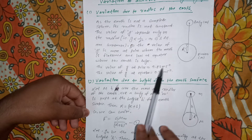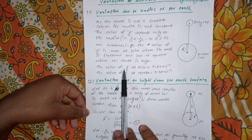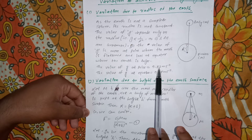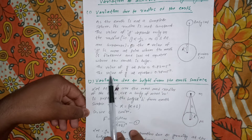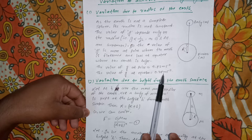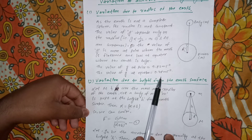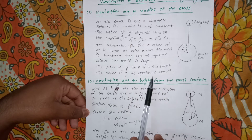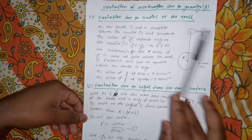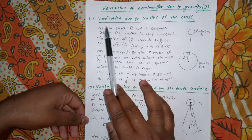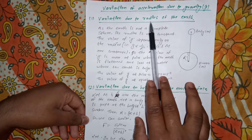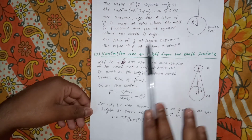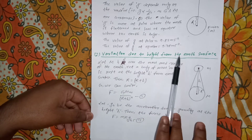This is why the value of g is more at the poles, where the Earth is flattened, and less at the equator, where the Earth bulges. The value of g at the poles is 9.83 m/s², which is slightly more than 9.8 m/s², and the value of g at the equator is 9.78 m/s², which is slightly less than 9.8 m/s². So the value of acceleration due to gravity depends on the radius of the Earth.